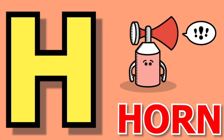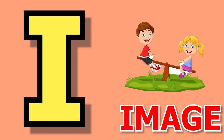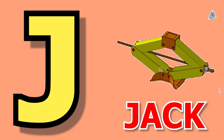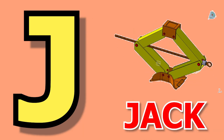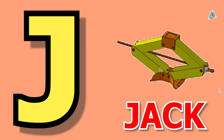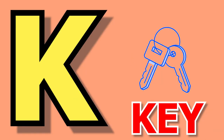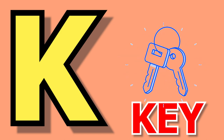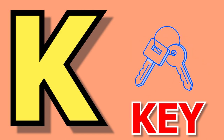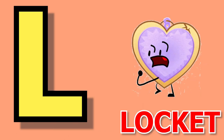H for horn, horn means horn. I for image, image means chitru. J for jack, jack means jack. K for key, key means chubby.